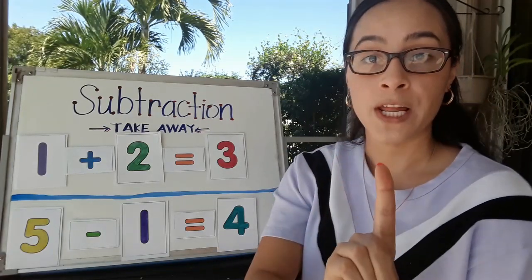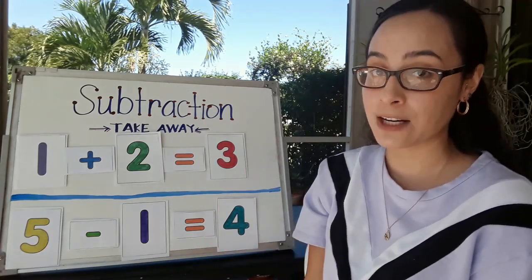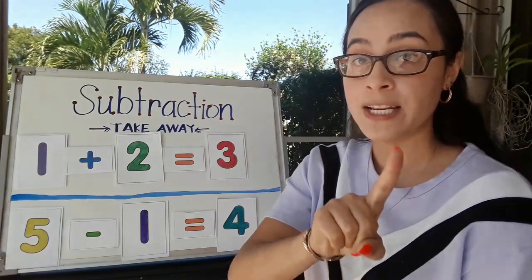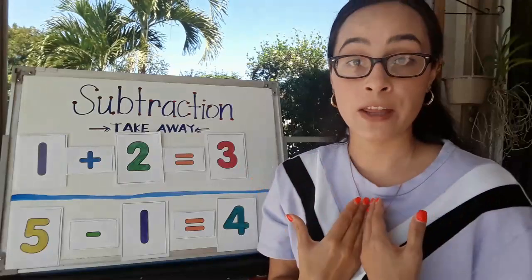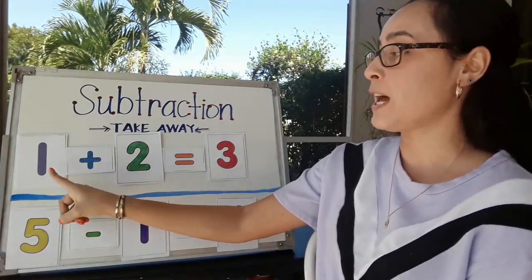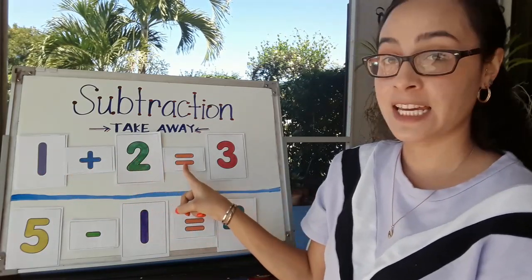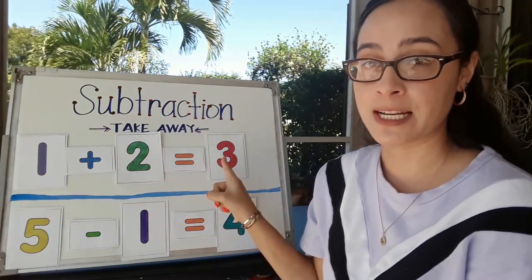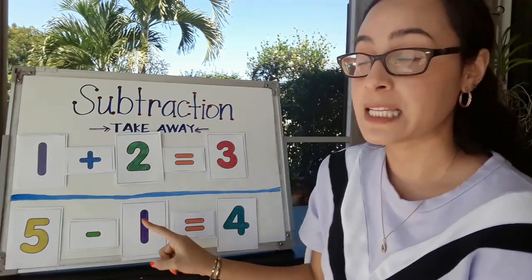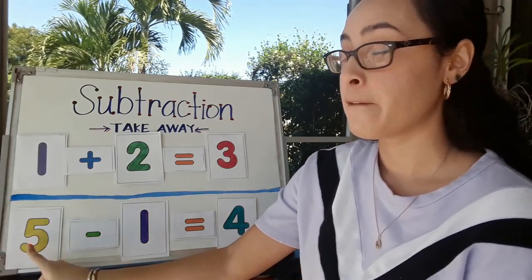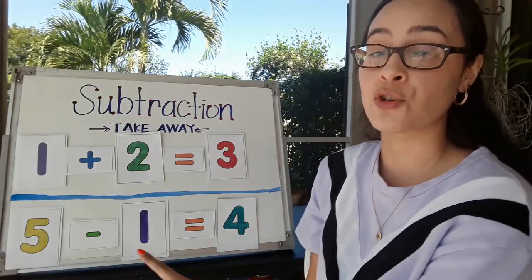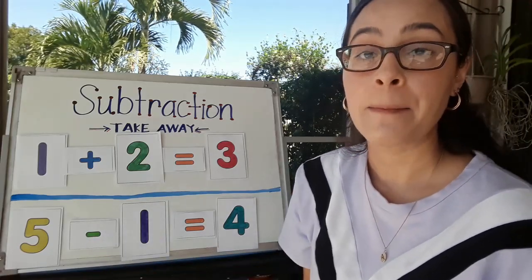So here we have two number sentences. One is an addition number sentence and the other one is a subtraction number sentence. Let's go ahead and read each number sentence. Remember, when we read, we go left to right and we point at each number and symbol as we read it. Let's start with the one that is over the blue line: one plus two equals three. This is an addition number sentence — you can tell because the symbol is a plus sign. Now let's read the number sentence under the blue line: five minus one equals four. I can tell that this is a subtraction sentence because of the symbol — this is a minus sign.